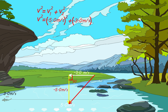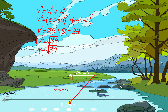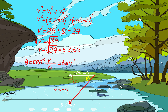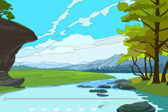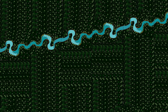V² = (−5.0)² + (−3.0)² = 25 + 9 = 34. So V = √34 = 5.8 m/s. For direction: theta = tan⁻¹(−5 / −3) = 59 degrees. The fish's resultant velocity is 5.8 m/s at 59 degrees below the x-axis.